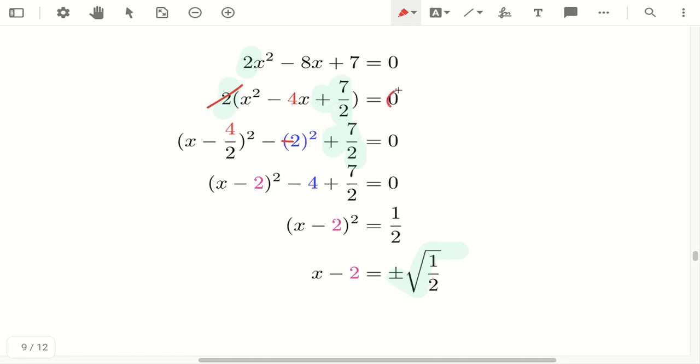And then you also notice that the 2 has disappeared because I divided by 2 throughout the equation. So 2, I divide 0, so it's gone. So 0 divided by 2, therefore the 2 is gone.